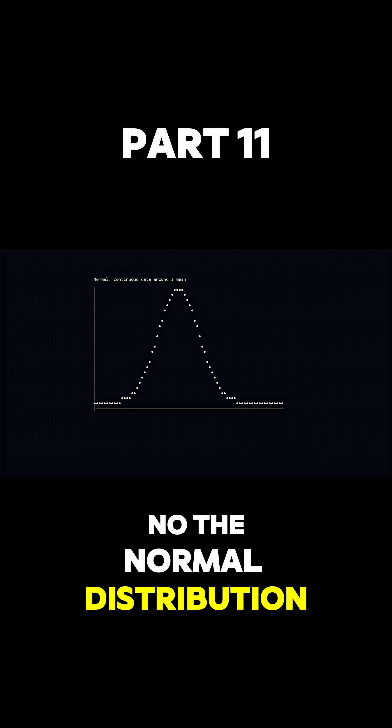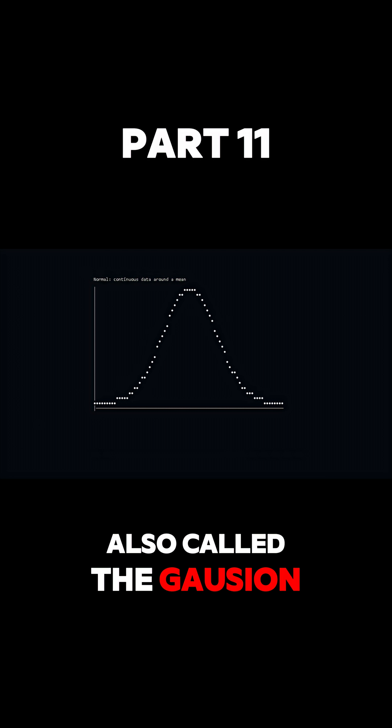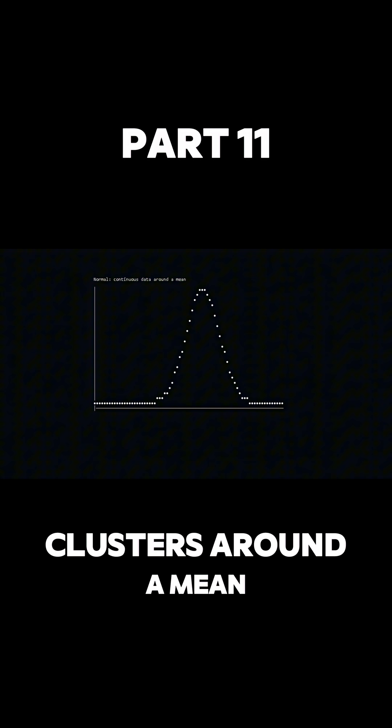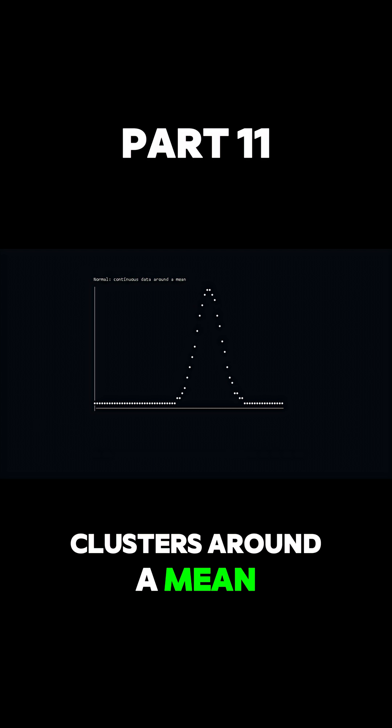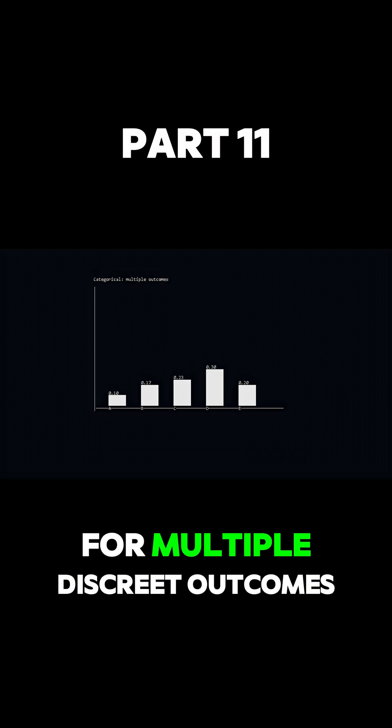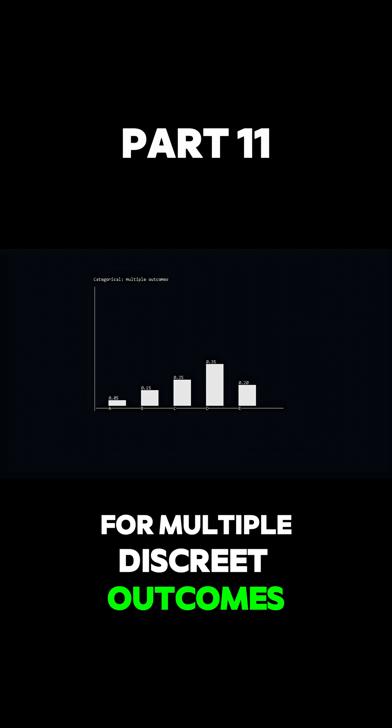Another common example is the categorical distribution, which is used for multiple discrete outcomes.